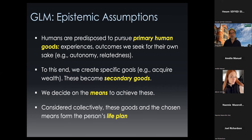For example, someone might seek autonomy by trying to earn as much money as possible. Or they might seek intimacy through having sex with children — a deeply problematic secondary goal, but the primary human good of intimacy itself is fine; we all need it. The difficulty is the way people go about achieving it. Human beings implicitly or explicitly decide on the means to achieve these goods. Together, these primary human goods and the chosen means form the person's good lives plan. Everyone has one, even if they can't articulate it — a way of ordering their natural desires that is expressed in their day-to-day life and gives their life structure.